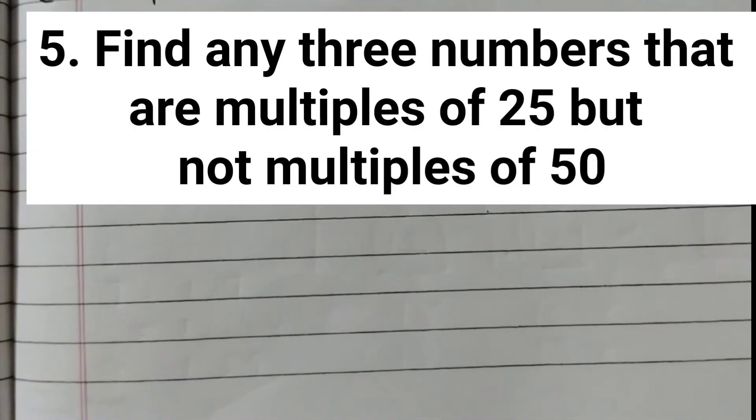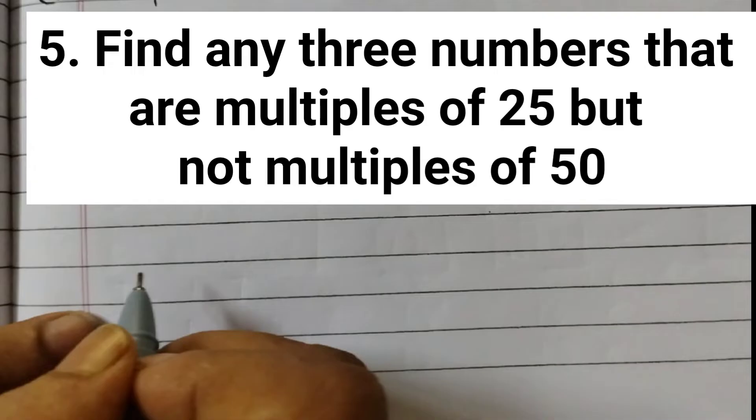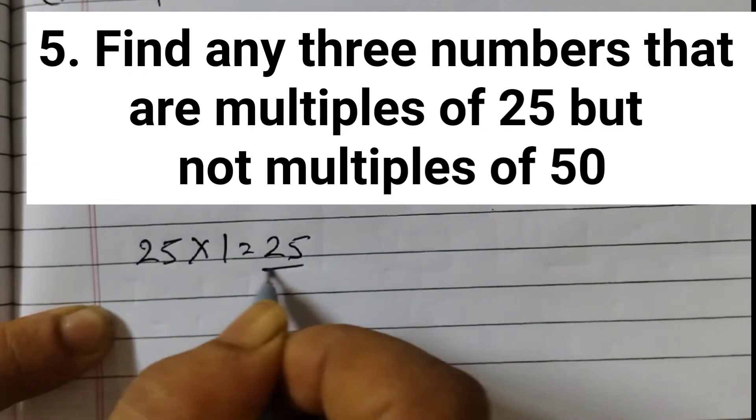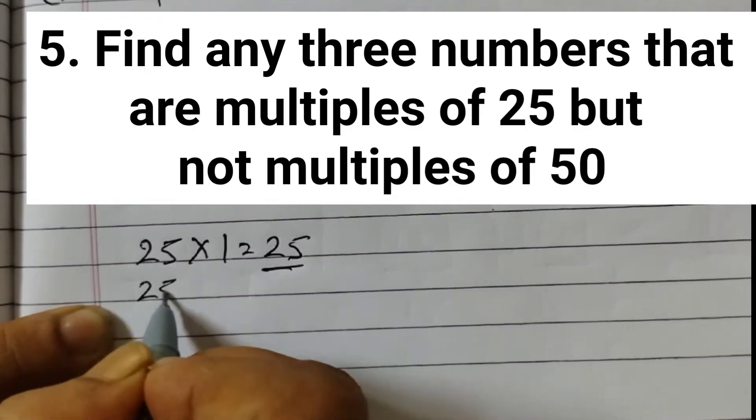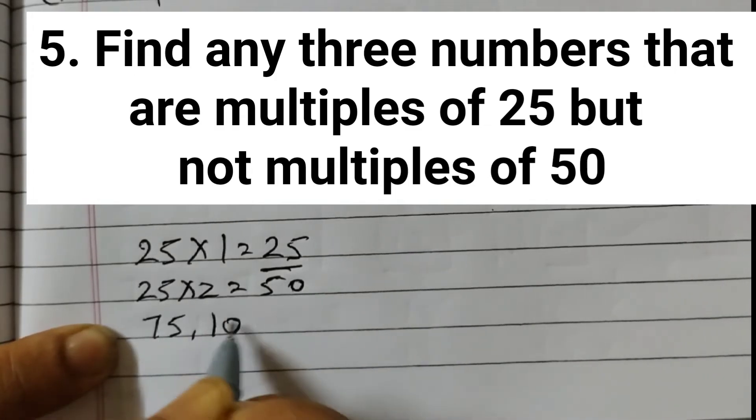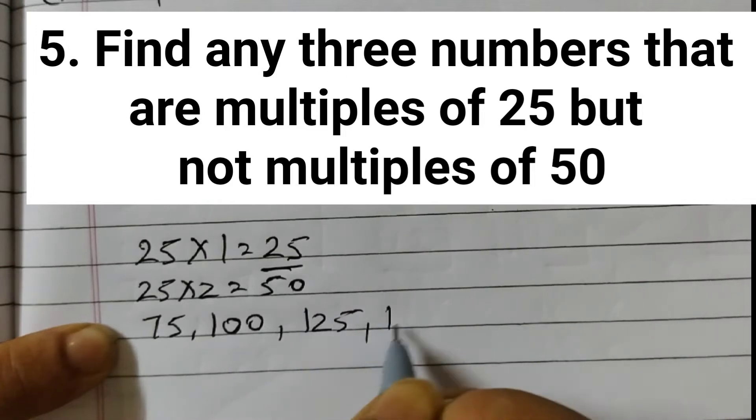Next question, question number 5 is find any 3 numbers that are multiples of 25 but not multiples of 50. So multiples of 25 we can find out by writing 25 into 1 is 25. So this is called a multiple. Similarly 25 into 2 is 50. The other multiples would be just go on adding 25: 75, 100, 125, 150, 175. So these are all the multiples of 25.